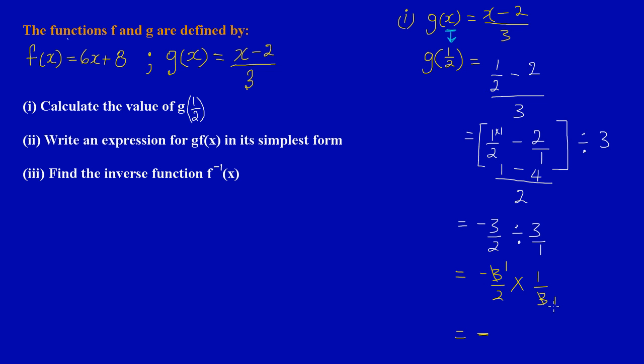A negative times a positive gives a negative. A 3 can go into itself once, so up top I have 1 times 1 equals 1, upon 2 times 1 equals 2. My answer when I calculate that is negative 1/2.